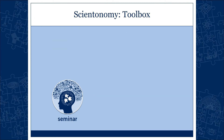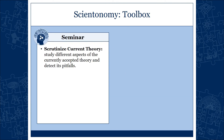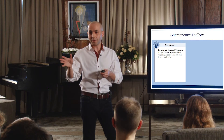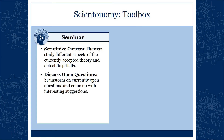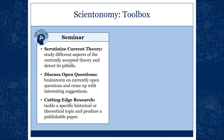The next tool is the seminar. Its goals: scrutinize the current theory, study different aspects of the currently accepted theory, and openly state as many open questions as possible. Everything will be open for debate. The second goal is to discuss open questions — brainstorm on currently open questions and come up with interesting suggestions. And finally, tackle a specific historical or theoretical topic and produce a publishable paper.